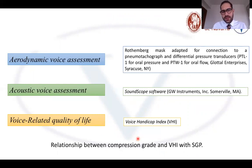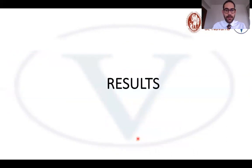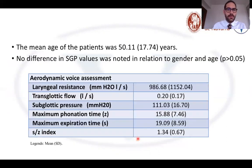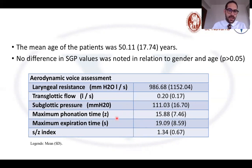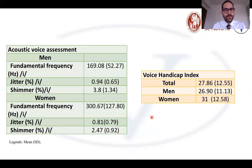What we wanted to do was measure the relationship between the compression grade of anterior-posterior and lateral compression with the Voice Handicap Index and the subglottic pressure value. Regarding results, the mean age of the patients was 50 years, and there was no difference in subglottic pressure value in relation to gender or age. In this table we see all the results of the aerodynamic voice assessments — the subglottic pressure was 111.03.